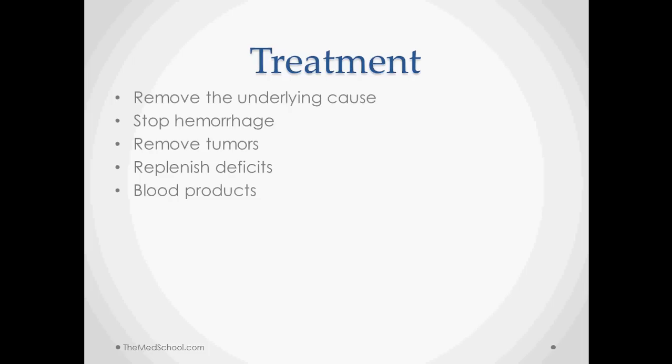So the treatment is as varied as the causes. So we need to worry about removing the underlying cause, whether that be stopping the hemorrhage that's causing it, removing a tumor, replenishing deficits like iron deficits, folate deficits, B12, and giving blood products or also administering erythropoietin analogs to help produce blood.